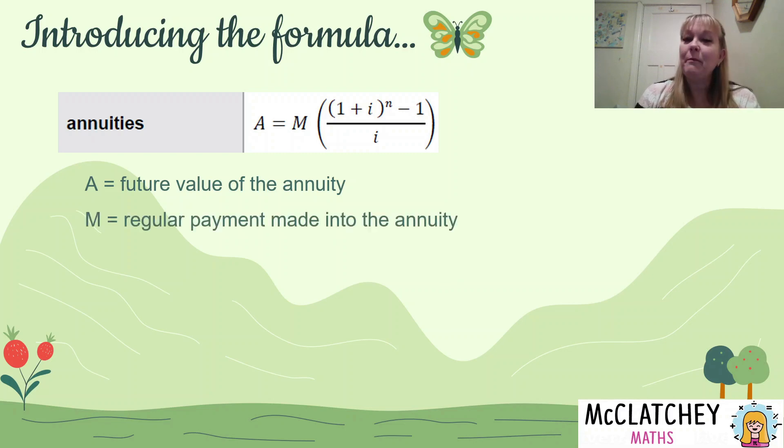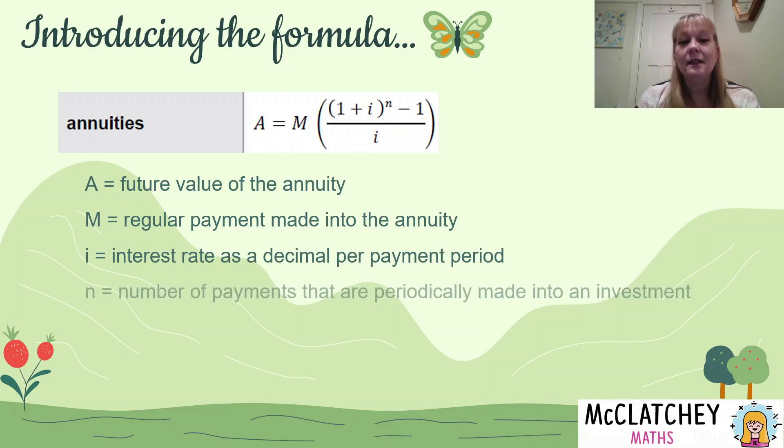M is our regular payments that are made into the annuity. I, as usual, is our interest rate as a decimal per payment period. So we need to convert an annual interest rate into a compounding rate per period. And N is the number of payments that are periodically made into the investment, same as we normally use with N. It's the number of compounding periods altogether.